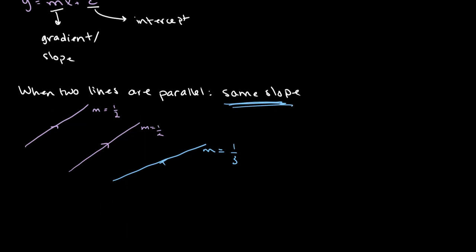Now, when two lines are perpendicular, then m1, or the gradient of the first line, multiplied by m2, or the gradient of the second line, is equal to negative 1.